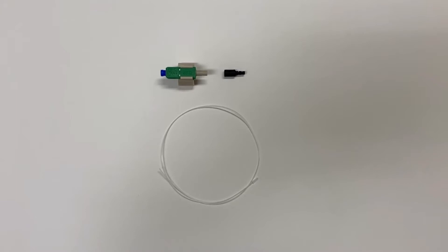This video demonstrates step-by-step termination instructions for the AFL SCA fast connector on 900 micron fiber.